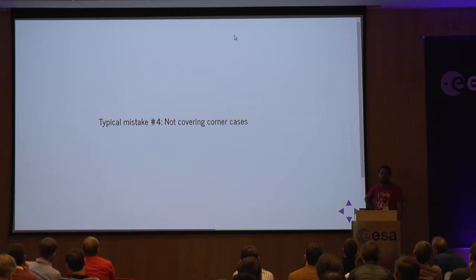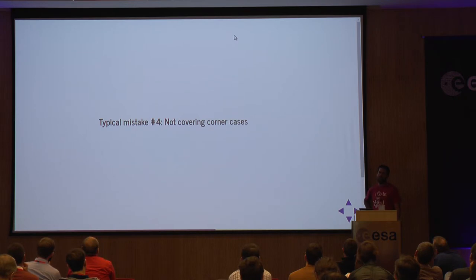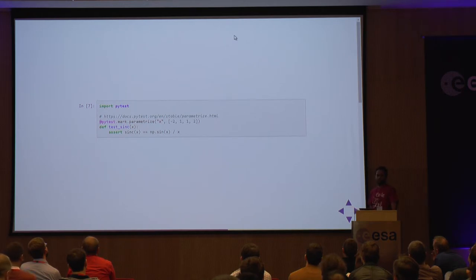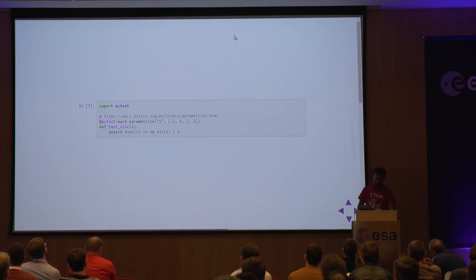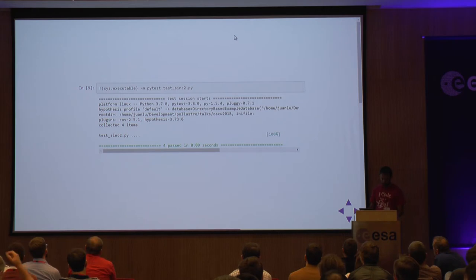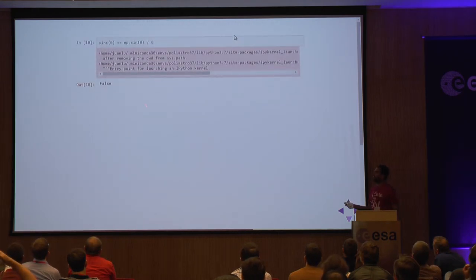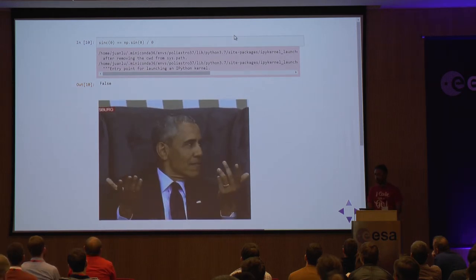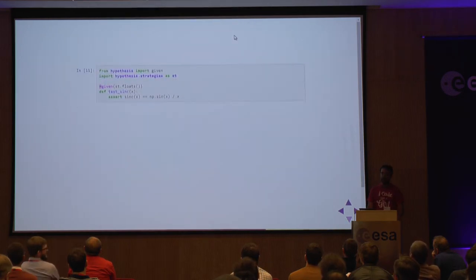Typical mistake number four is not covering the corner cases. We cannot always anticipate which corner cases will arise. For example, I might test four values — minus two, minus one, one, and two — using PyTest's parameterize feature to repeat the test for many values. All tests pass. But it fails for zero because we're dividing zero by zero and getting NaN, which is different from itself. How do we cover ourselves from this kind of corner case?